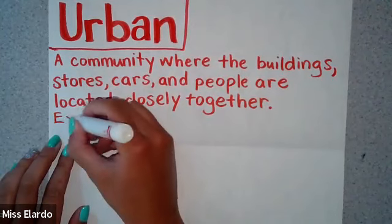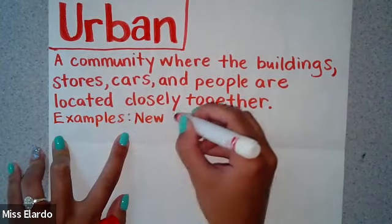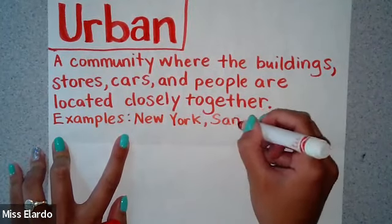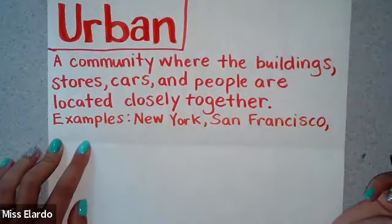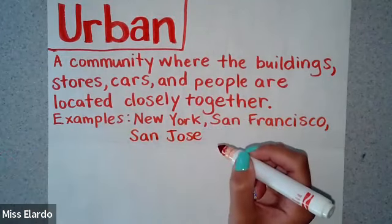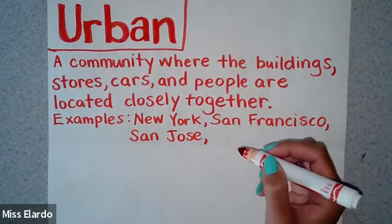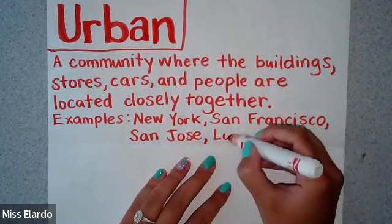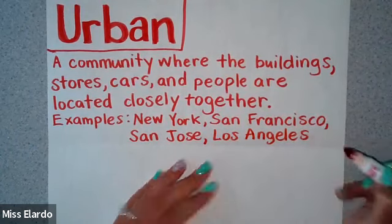I'm going to write down some examples — these are ones I was telling you about earlier as we were watching the video. We have New York — that's an urban community for sure. Another one closer to us: San Francisco. Even closer to us would be San Jose, which is considered an urban community. If you've ever been to downtown San Jose, there are a lot of buildings. Lastly, Los Angeles — that's the last one I'll write down.